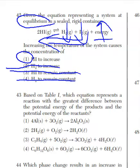For 43, it says based on reference table I. So they gave us a break. We know we have to check that out. Which equation represents a reaction with the greatest difference between potential energies of the products and the potential energy of the reactants? The greatest difference is going to be the highest delta H value. All we need to do is scope out these four equations on reference table I and we'll have the answer.